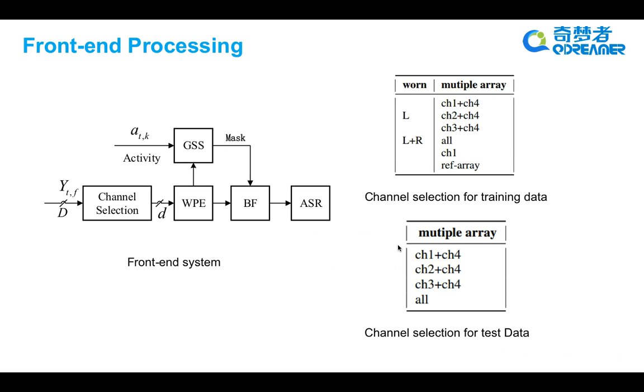As shown in the figure, the multi-array signal Y_TF is first filtered by a channel selection block, which selects channels of different arrays and combines them to form a multi-channel signal.